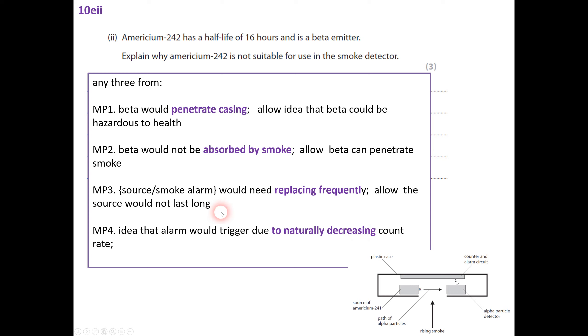You could talk about beta would penetrate the casing. So bringing the idea of beta would get out of there. So it has to be alpha because it says beta emitter clearly, doesn't it? You could say beta would not be absorbed by the smoke. So beta would just go through, they would penetrate. The smoke alarm would need replacing frequently because the half-life is so short. You could bring in that the source would not last as long.